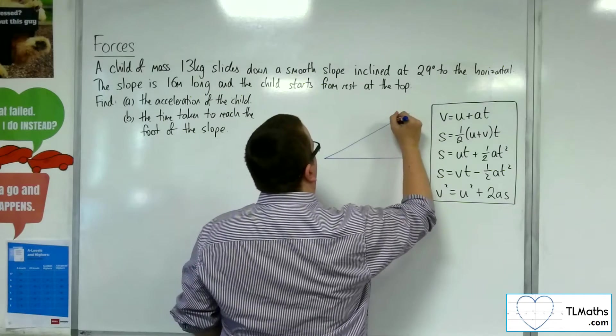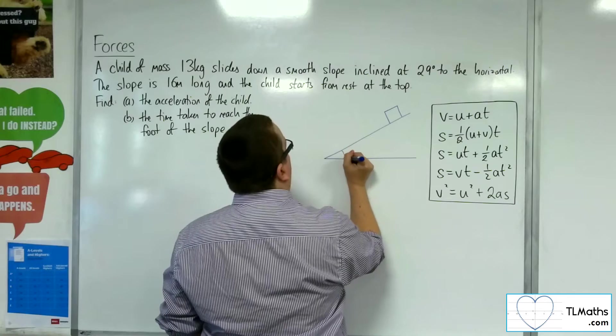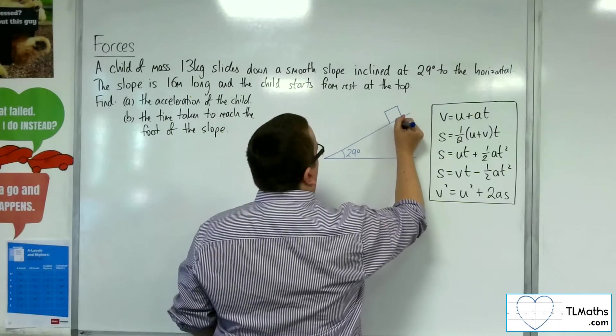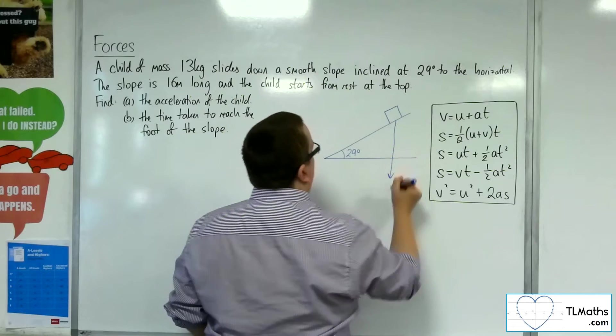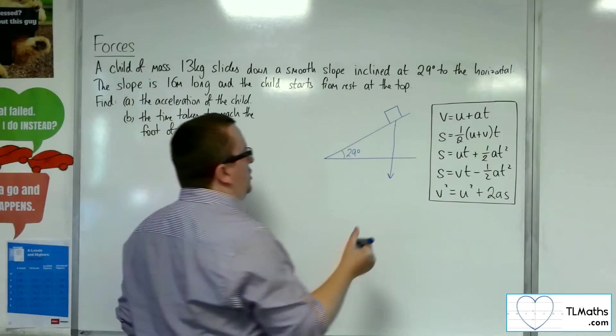Here's the slope. Here's the child at the top of the slide. This angle is 29 degrees. Now we've got the weight working vertically downwards. That's 13 times g.